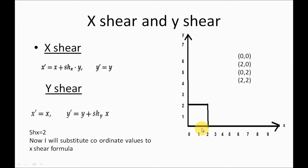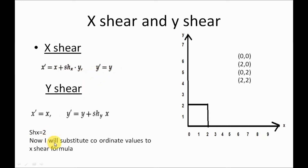The coordinates for the square are (0,0), (2,0), (0,2), and (2,2). First I will explain shearing with respect to the x-axis. The shearing factor is Shx = 2. I will now substitute the coordinate values into the X-shear formula: x' = x + Shx × y, y' = y.